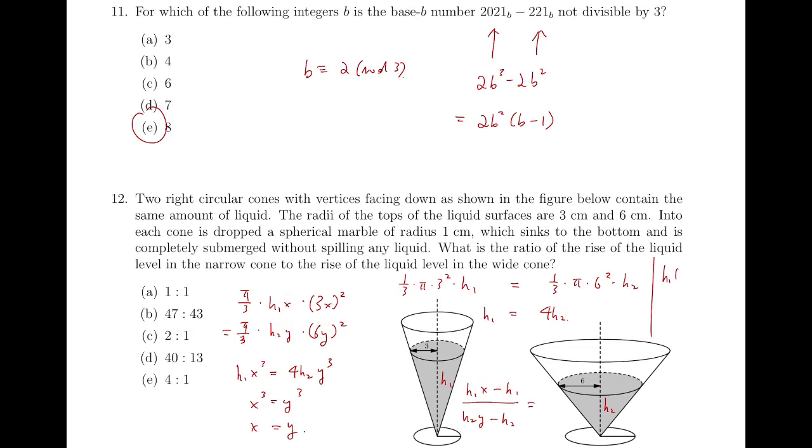So, simplifying, we will have H1x cubed equals 4H2y cubed, because H1 equals 4H2, so X cubed equals Y cubed, which means X equals Y. So the ratio of the rise of the liquid is then H1x minus H1 over H2y minus H2, and that's exactly H1 over H2, which is again 4, so the answer is E as well.